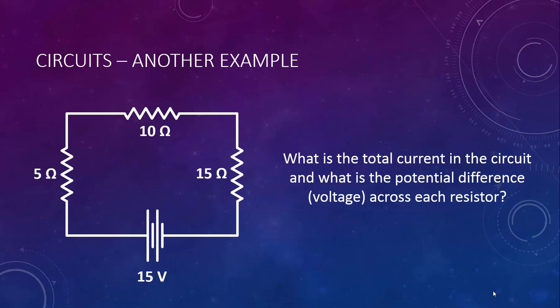Here's another example for you to try. What is the total current in the circuit, and what is the potential difference across each resistor? Hint: use the table.